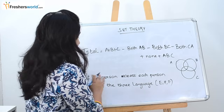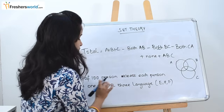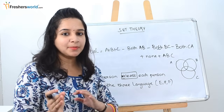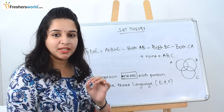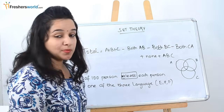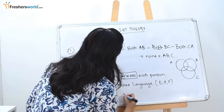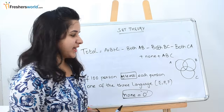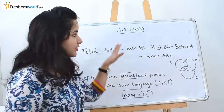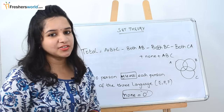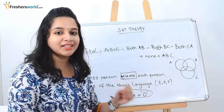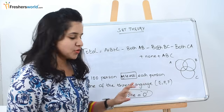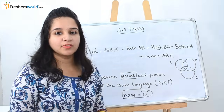The second tip is about the phrase 'at least.' For example: out of 100%, at least each person knows one of the three languages. As we know, 'at least' means minimum to maximum. So at least one person knows all three languages, meaning people who don't know either of the languages is zero. People who know none of the languages is zero. In most questions there is a catch — the question already mentions 'at least one person knows each language,' which means you can directly write that none equals zero in your answer.